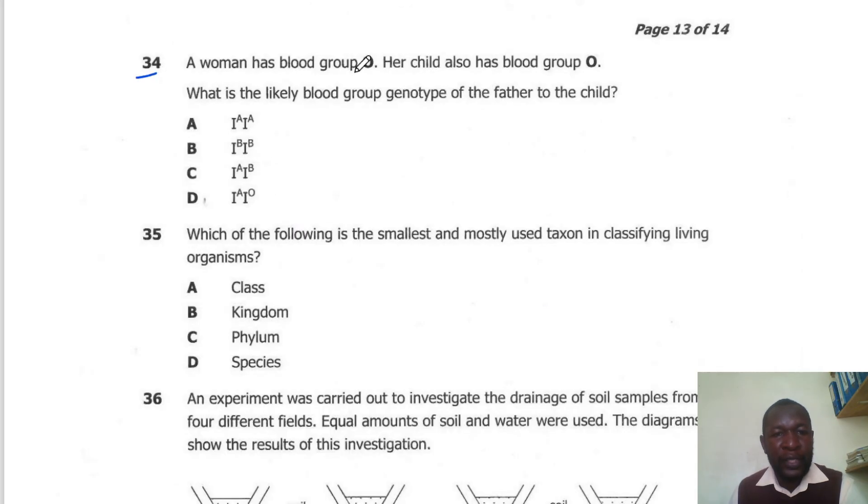Question 34. A woman has blood group O. Her child also has blood group O. What is the likely blood group genotype of the father of the child? The father has to also have an O allele to ensure that the child also has blood group O. The genotype showing an allele for O is D. So D here is the correct answer.